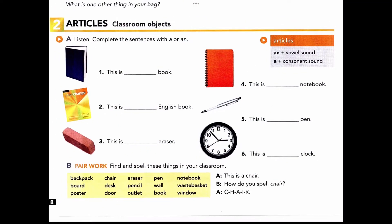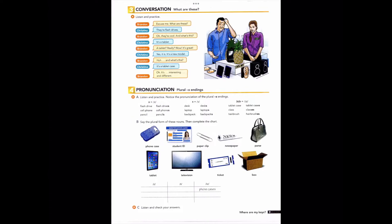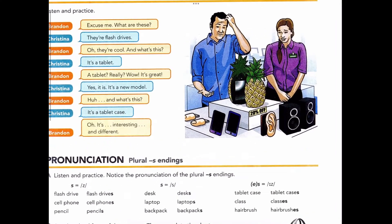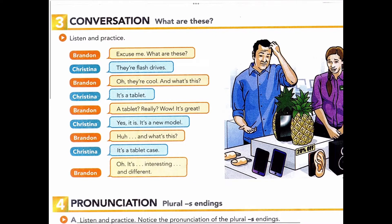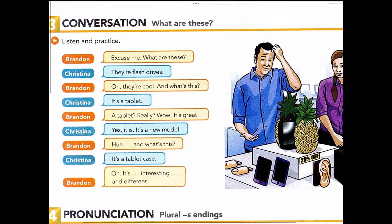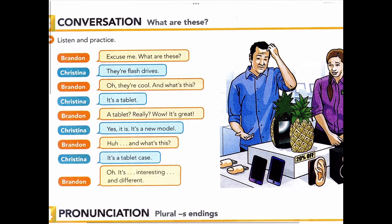Page 9, Exercise 3, Conversation: What are these? Listen and practice. Excuse me, what are these? They're flash drives. Oh, they're cool. And what's this? It's a tablet. A tablet? Really? Wow, it's great! Yes, it is. It's a new model. Huh, and what's this? It's a tablet case. Oh, it's interesting and different.